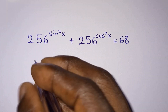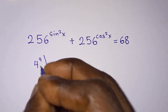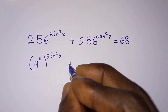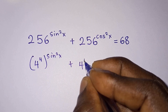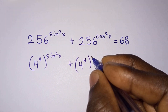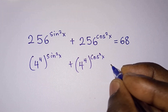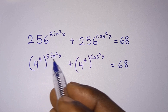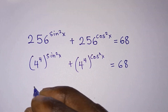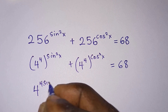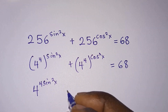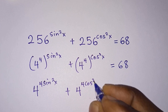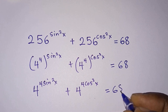256 can be written as 4 to the power 4, so we have 4 to the power 4, all to the power sine squared x, plus 4 to the power 4, all to the power cosine squared x, equal to 68. Straight away we can multiply the exponents, giving 4 to the power 4 sine squared x plus 4 to the power 4 cosine squared x equals 68.